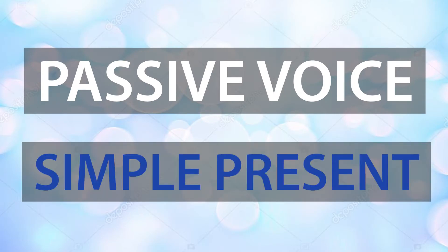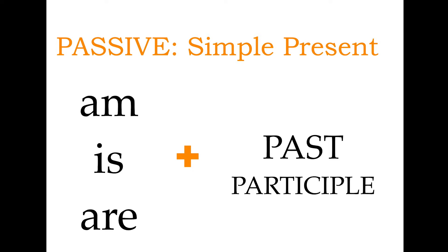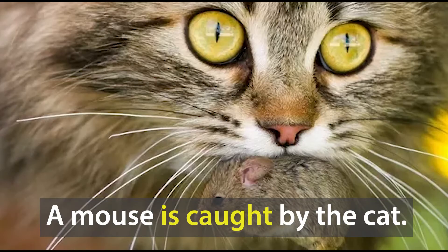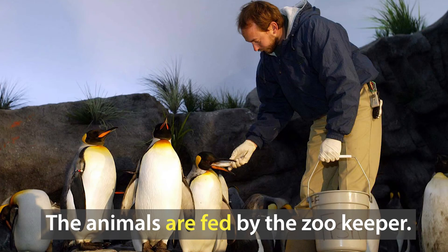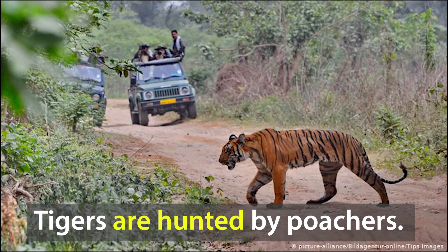Passive voice, simple present: am/is/are + past participle. For example: 'A mouse is caught by a cat.' 'The animals are fed by the zookeeper.' 'Tigers are hunted by poachers.'